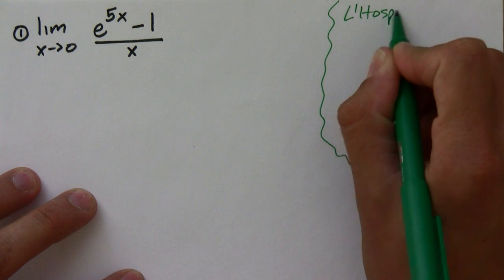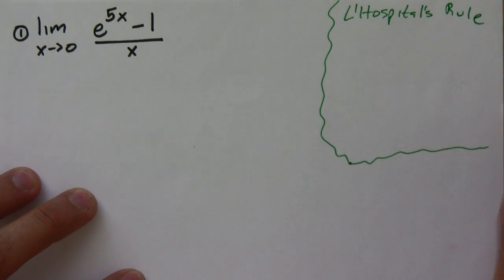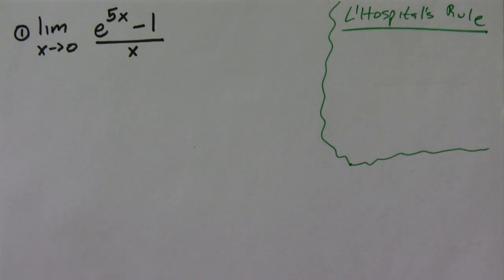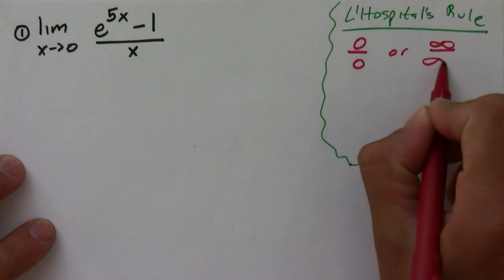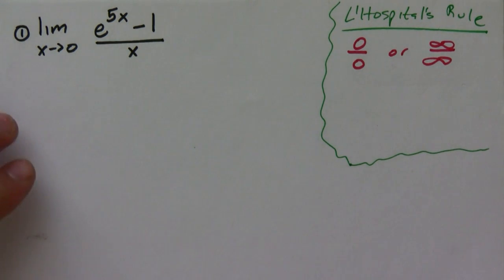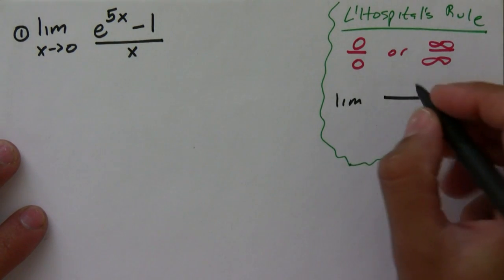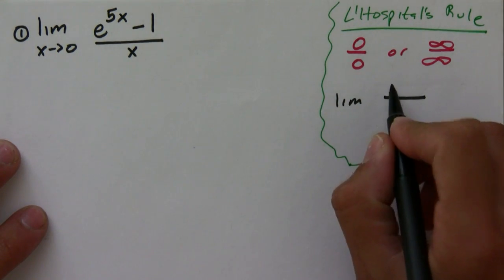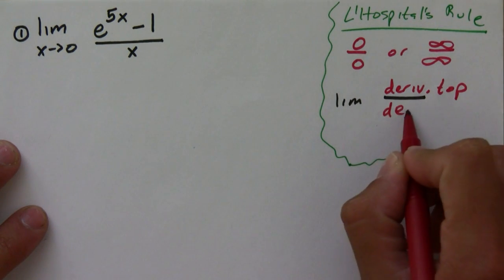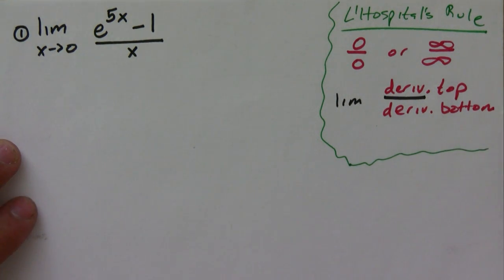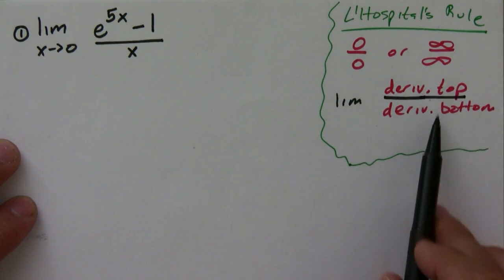L'Hôpital's rule is a little trick to help us do limits — limits that we otherwise wouldn't really be able to do. The idea behind L'Hôpital's rule is that if you have a limit of the form 0 over 0 or infinity over infinity, what you can do is get the limit of the derivative of the top over the derivative of the bottom. This means not using the quotient rule, but simply getting the derivative of the top and the derivative of the bottom.